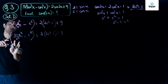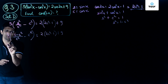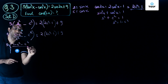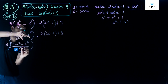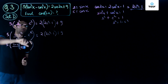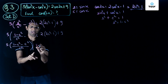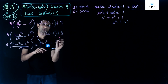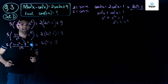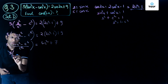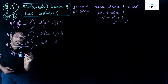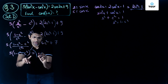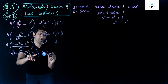Taking common denominator c squared on the left hand side, I write 5 times 1 minus c squared minus c to the power 4, all over c squared. On the right hand side I get 4c squared minus 2 plus 9, which becomes 4c squared plus 7. Multiplying both sides by c squared, I get 5 times 1 minus c squared minus c to the power 4 equals c squared times 4c squared plus 7.